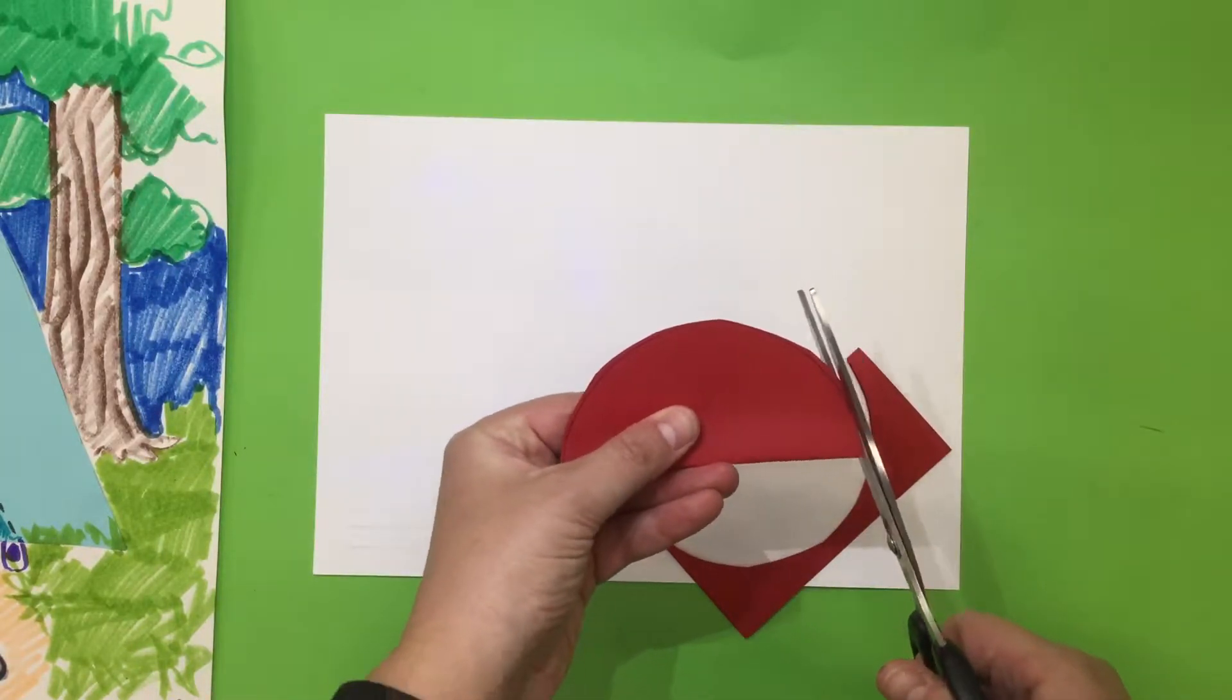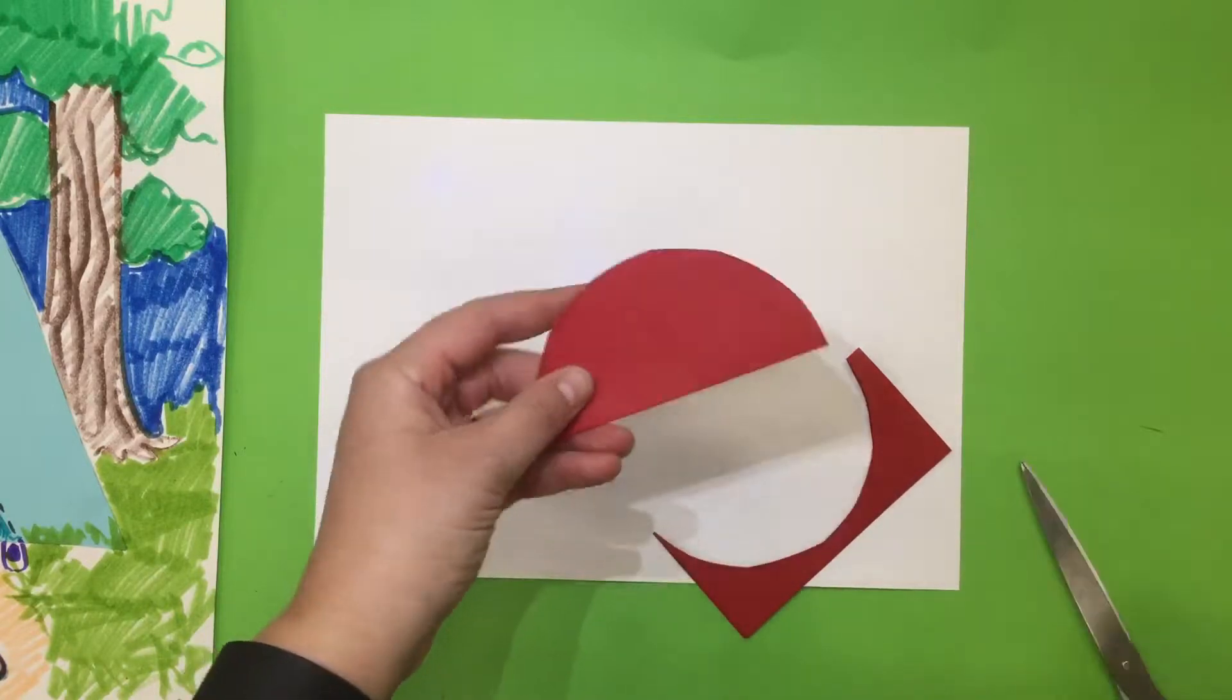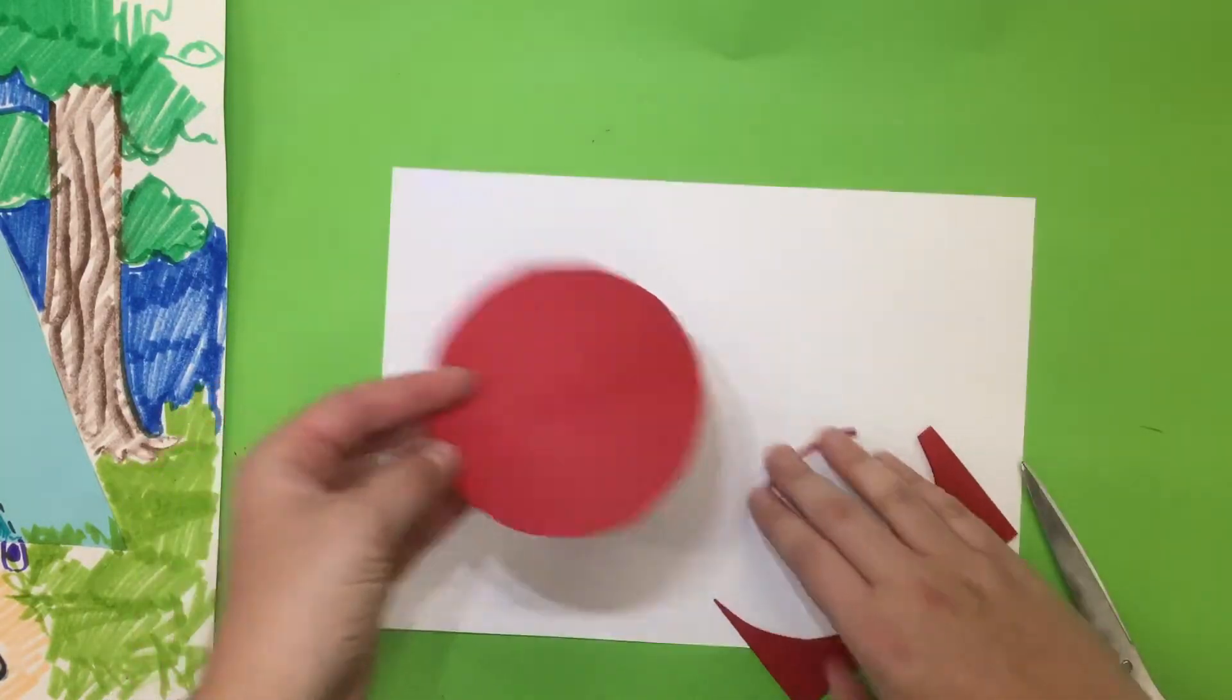I'm actually going to trim this down here. Now when I open it up I have a perfect circle.